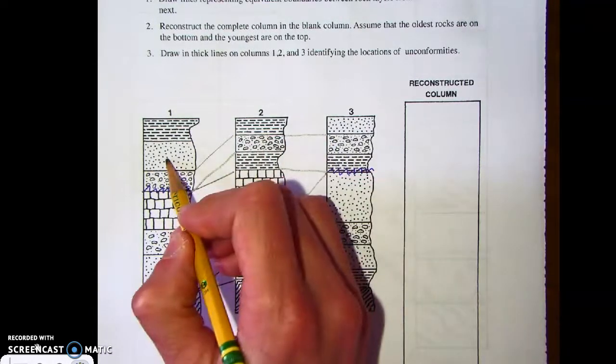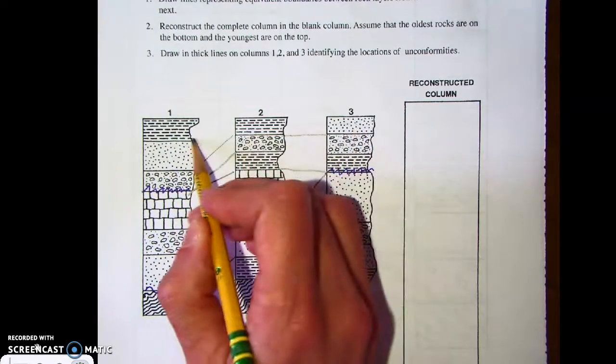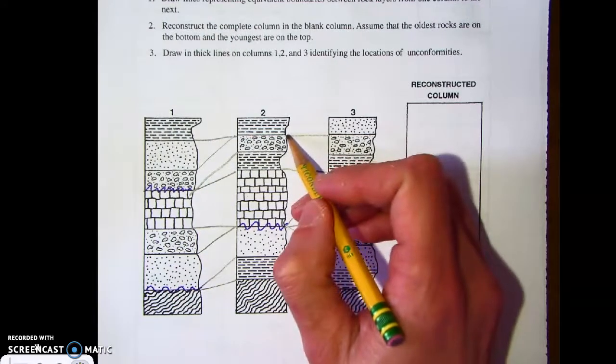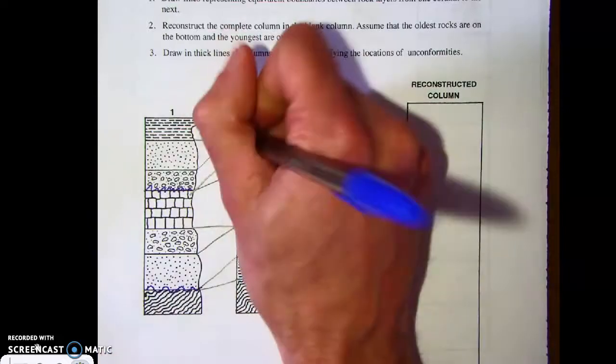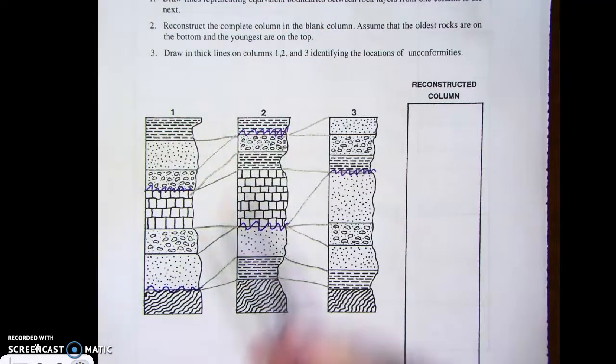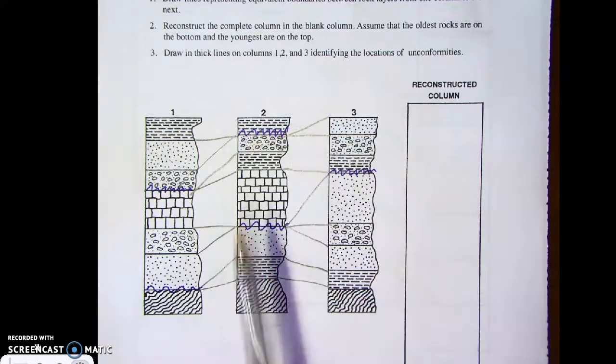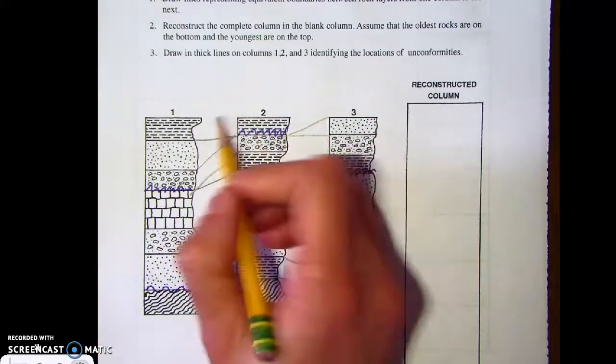And now we have sandstone in one, sandstone in three, but it's missing in two. I'm going to show that with a line like that, and like this. This means we have another unconformity at two. Again, an unconformity means that the rock weathered and eroded away. And then we have shale and shale between one and two.